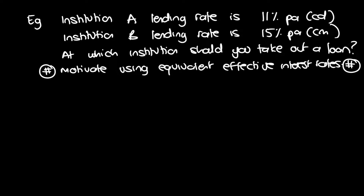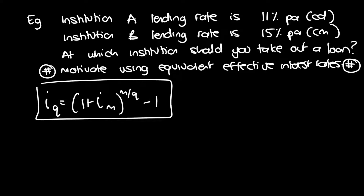For equivalent effective interest rates, the formula is IQ equals 1 plus iM, to the power of M over Q, minus 1. We'll use this formula because both institutions use periodic compounding — daily and monthly. Remember, when there's continuous compounding, this formula changes.